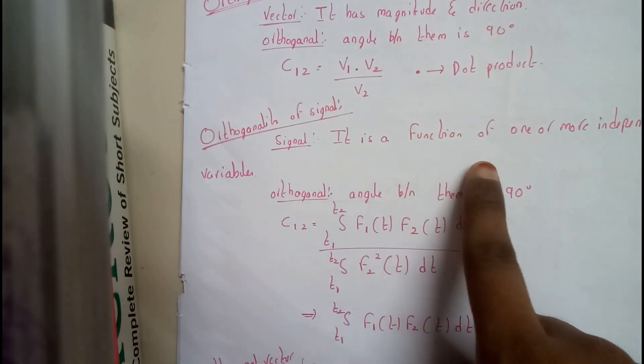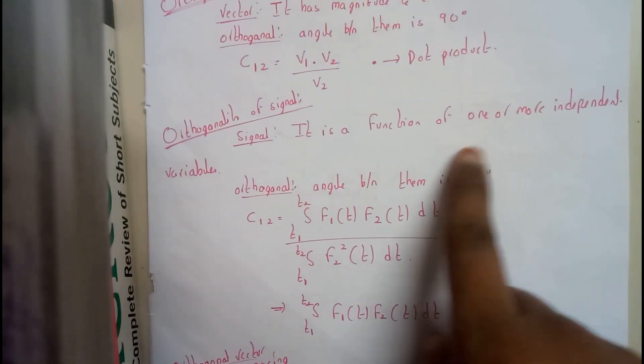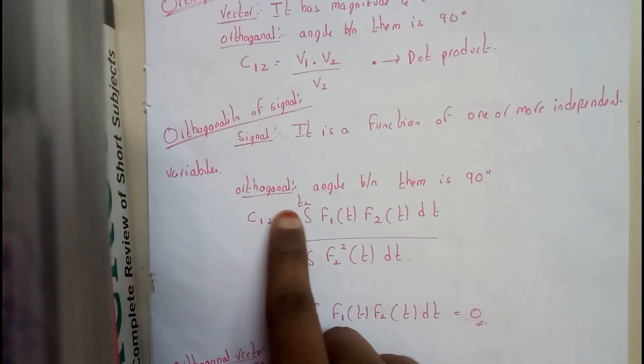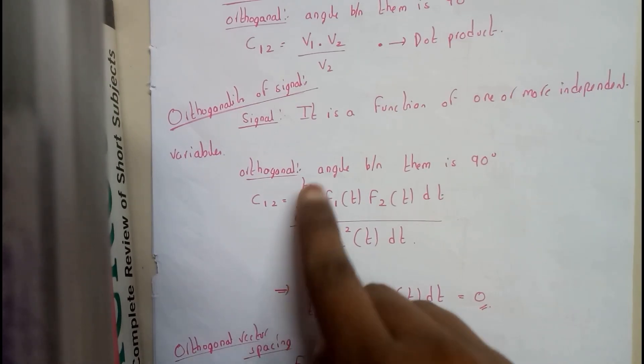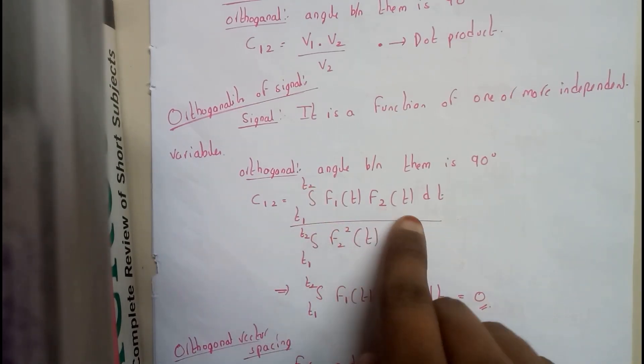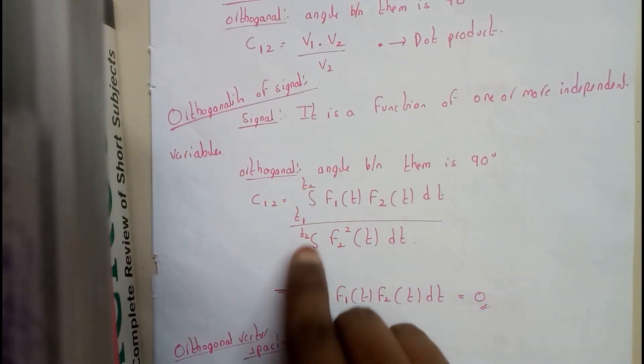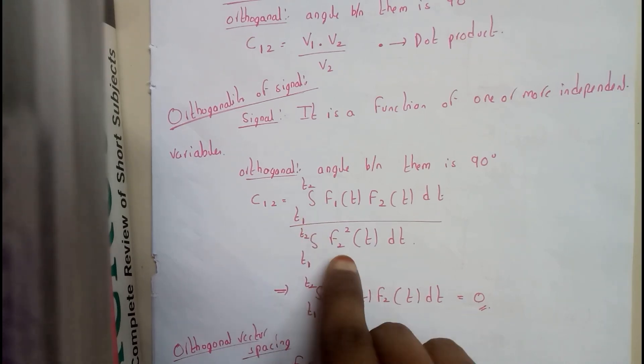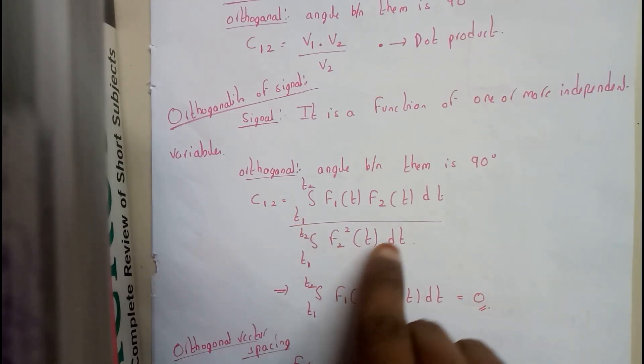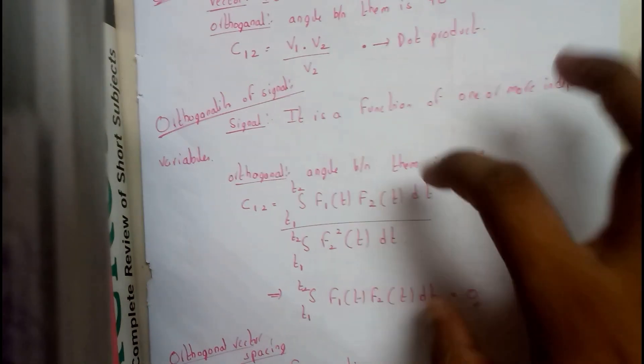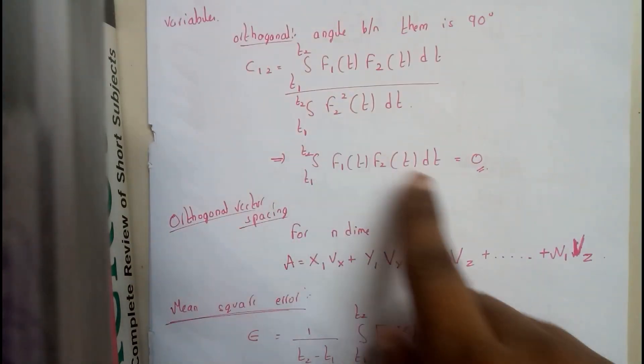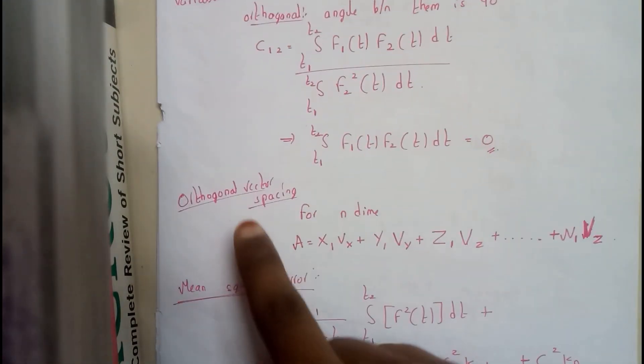Orthogonal signals have an angle of 90° between them. c12 equals integral t1 to t2 of f1(t)f2(t)dt divided by integral t1 to t2 of f2 squared of t dt. Now I hope everyone got a small idea on this. If c12 equals 0, signals are orthogonal.